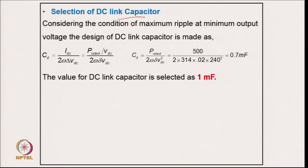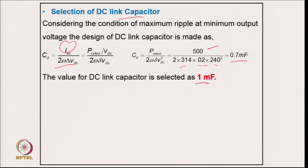Considering the condition of maximum ripple at minimum output voltage, the DC link capacitor is designed using C_d = I_d / (2 × ω × ΔV_d). Substituting the output power, twice the supply frequency for the second harmonic, and 2 percent voltage ripple across 240 V gives approximately 1 mF. A value slightly higher is selected to ensure ripple always stays below 2 percent.